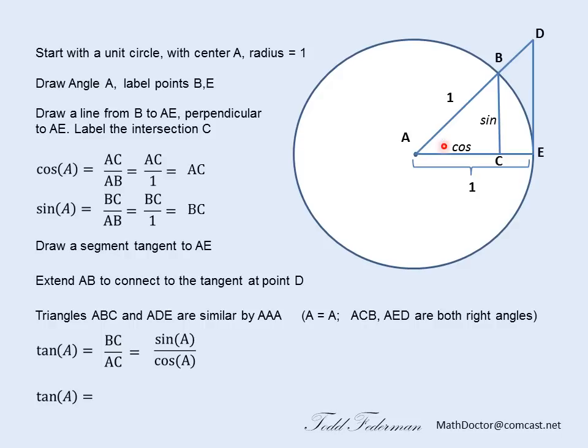Now, let's take a look at the tangent of A using the larger triangle. Here, the opposite is DE, and the adjacent is AE. But we know that the length of segment AE is 1, so we can reduce this to simply DE over 1. And we can simplify again. The tangent of angle A for the larger triangle is simply the length of the segment DE.